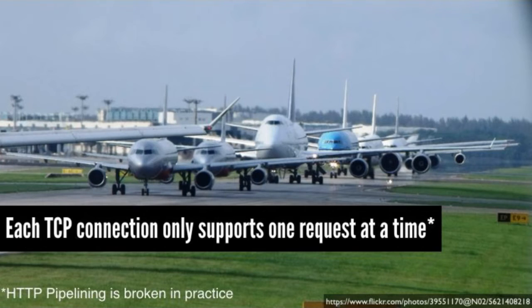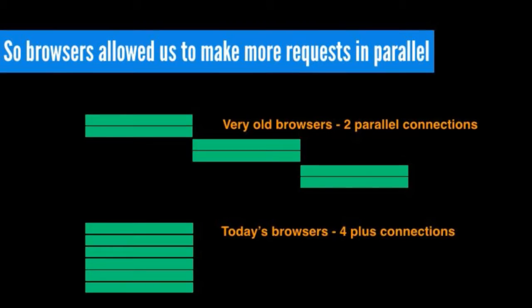Each TCP connection can only support one HTTP request at a time. Until that request is finished, the TCP connection can't be used for anything else. In the initial spec, browsers were only allowed two TCP connections to make two requests in parallel. Firefox discovered that upping that limit made pages load faster, so we went from two parallel connections to four, six, or eight. IE11, under some circumstances, makes something like 11, 12, or 13.